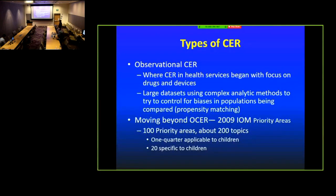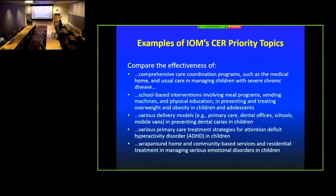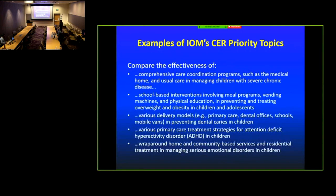The IOM identified about 200 topics, about a quarter applicable to children, 20 specific to children. Priority areas included comparing care coordination projects such as medical home, managing kids with complex and chronic conditions, school-based interventions preventing and treating overweight and obesity, primary care treatment strategies for ADHD, and wraparound home and community-based services for severe mental health disorders. This was a huge change in the field — there was a real focus on health services research, even at NIH, pushing toward T3 and T4 science.